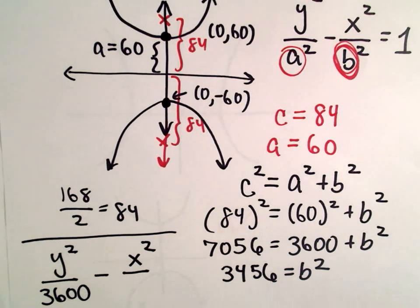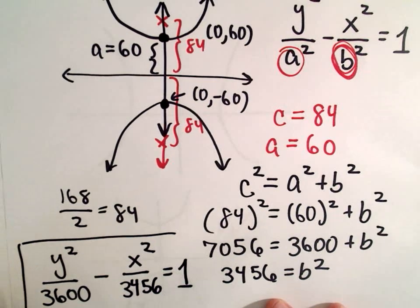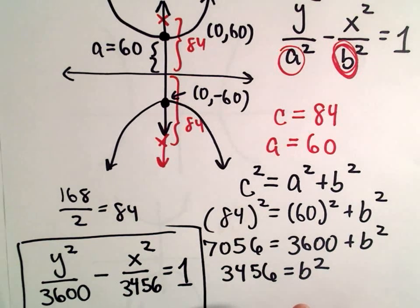And then we're going to have minus x squared over b squared. But again, we said b squared was equal to 3456. We'll set that equal to 1. And now we have the equation of our hyperbola.